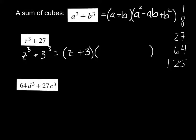So that tells you what's going to go in the a spot and the b spot. In the a spot you've got z, in the b spot you've got 3, because that's what was cubed in z³ + 27. So now we need z² minus the two multiplied together, so 3 times z, and then plus 3², which is 9. And that would be the factored form of z³ + 27.